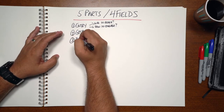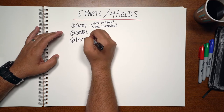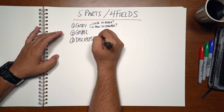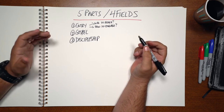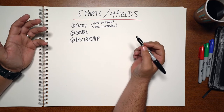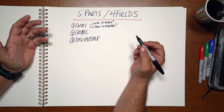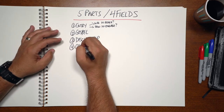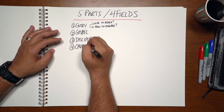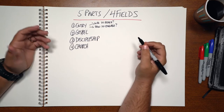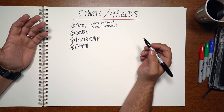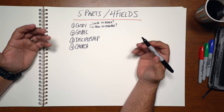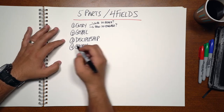The third is discipleship — how do we teach new believers to obey Jesus, including his Great Commission? The fourth is church — how do we gather believers together to form a community that the Bible calls church so they can be all that he's called them to be?